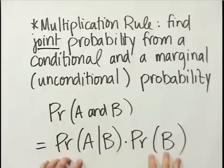This is actually a variation of the definition of conditional probability. The definition of conditional probability is joint probability divided by marginal probability. And if you rearrange that, you get the multiplication rule, which says that the joint probability is equal to the conditional times the marginal probability.